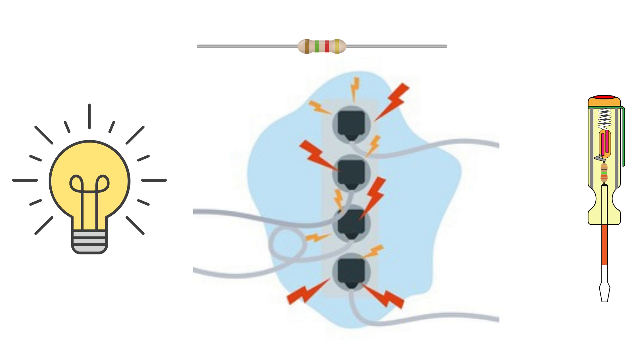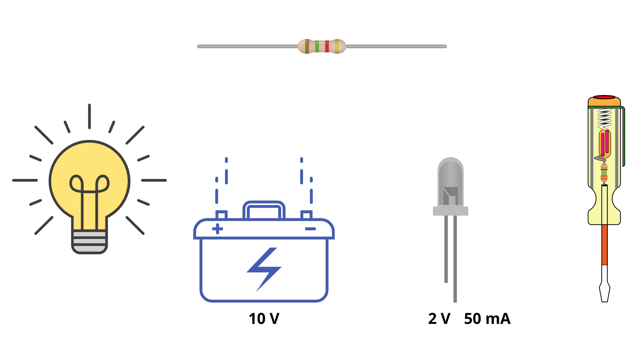Now you might wonder that as voltage drop is a loss in voltage, it probably does not have any applications. This is not true. Remember when we discussed Ohm's law, we talked about an example connecting a 10 volt supply to a 2 volt LED, and that upon direct connection the LED would get damaged.